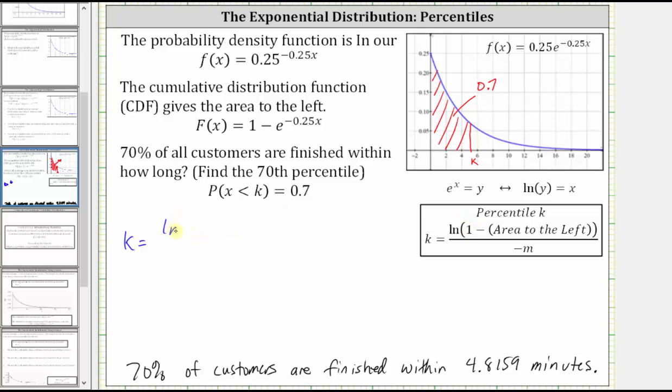Is equal to natural log of one minus the area to the left, which is the 0.7, divided by the opposite of m, which is negative 0.25.